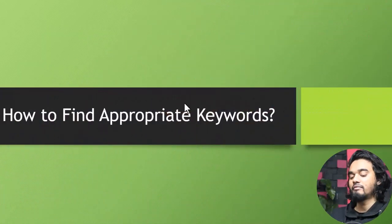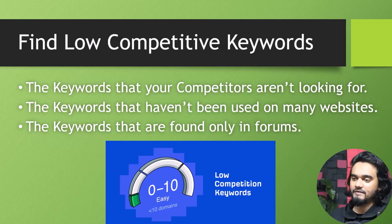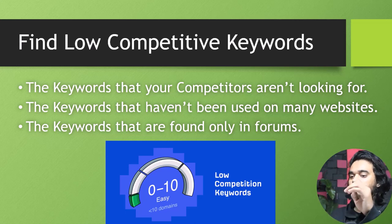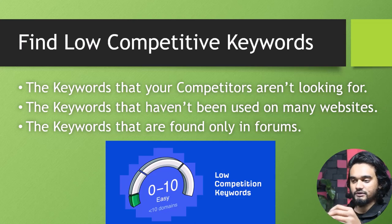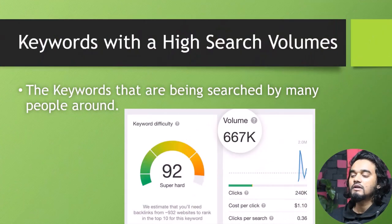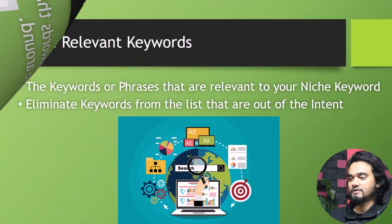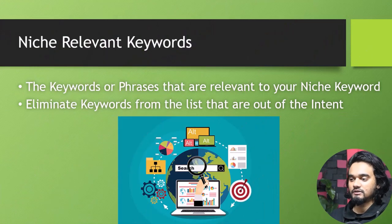Number one: find low-competitive keywords — the keywords your competitors are looking for, or keywords that haven't been used on many websites, keywords found only in forums. Number two: keywords with high search volumes — keywords being searched by many people that have high search volume and clicks. Number three: niche-relevant keywords — phrases that are relevant to your niche; eliminate keywords from the list that are out of your intent.